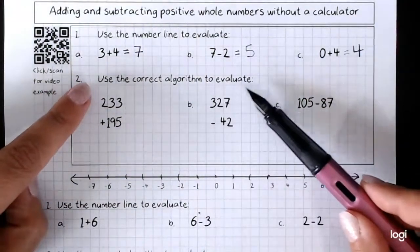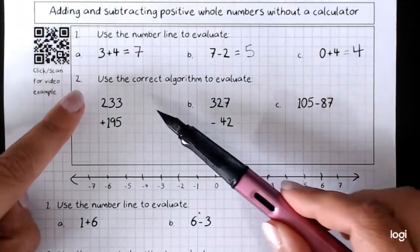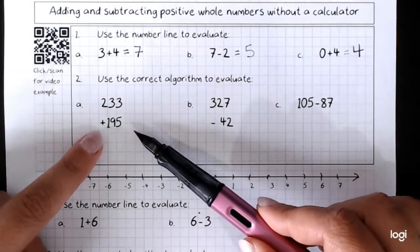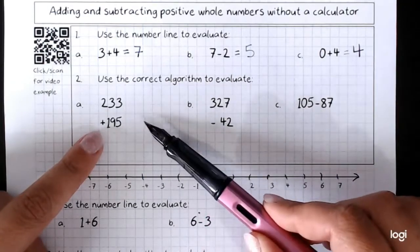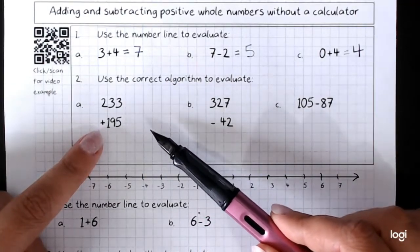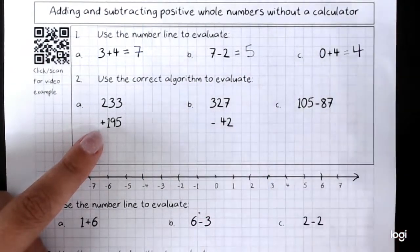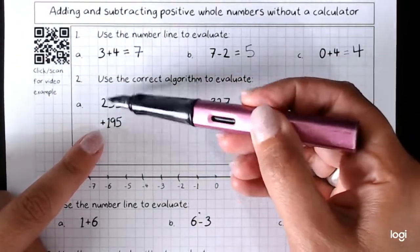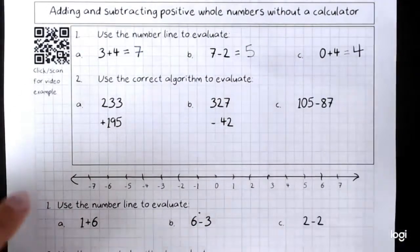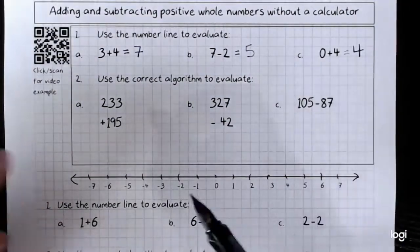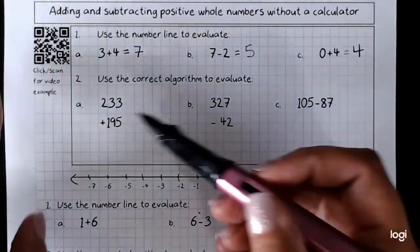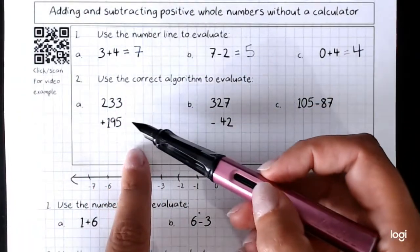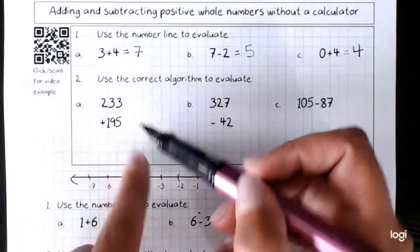The way that we set out adding or subtracting, the first number on top plus the second number underneath. It's already done for us here. And remember, of course, that our place values need to be lined up. So the units are in line, the tens are in line, the hundreds are mostly in line. My writing was a bit messy. We start adding or subtracting at the smallest place value, so here with the units.